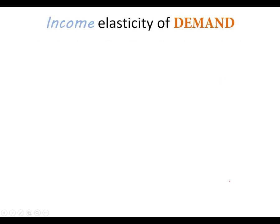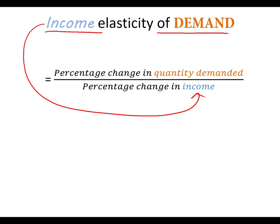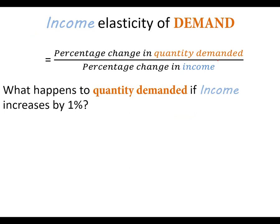For income elasticity of demand, remember the first word — whatever comes before 'elasticity' goes to the bottom; that is our impulse. Whatever comes after the word 'of' is the quantity we want in the numerator. Demand is not a quantity, but we have quantity demanded associated with it. This tells us what happens to quantity demanded if income increases by one percent. So this is a fraction, and if we put it over one, whatever number we get for the elasticity is the percentage change in quantity demanded.